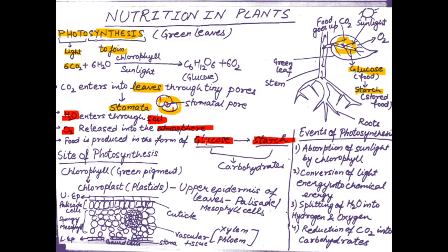Both glucose and starch are carbohydrates. Glucose is the monomer of starch and starch is the polymer of glucose. Whenever extra food is available, it is stored by the plant in the form of starch.